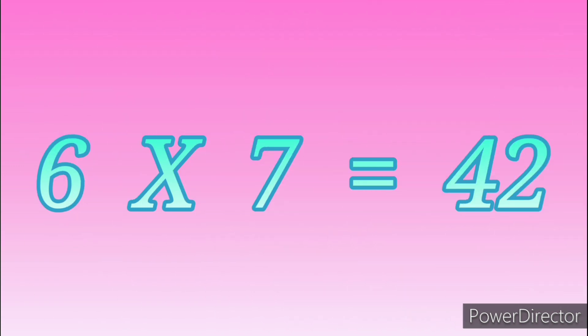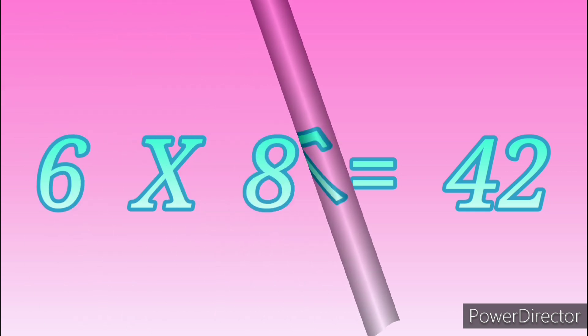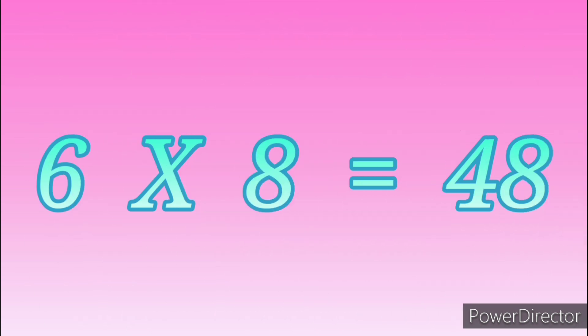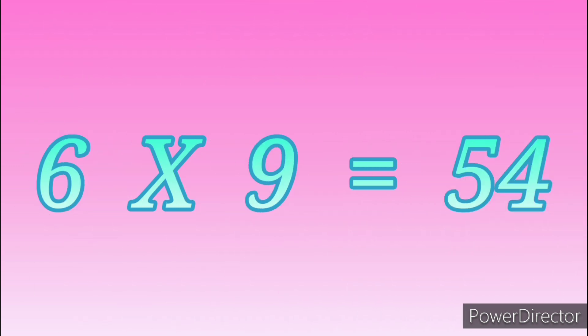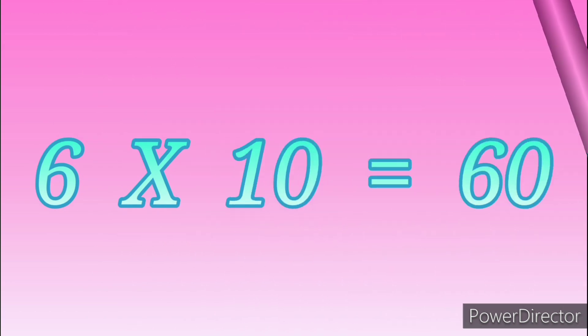6 sevens are 42. Six eights are forty-eight. Six nines are fifty-four. Six tens are sixty.